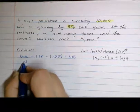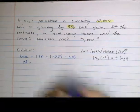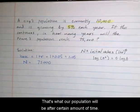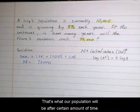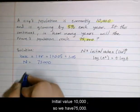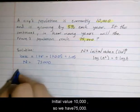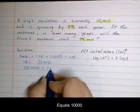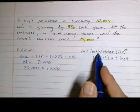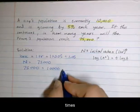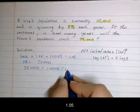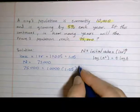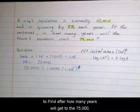N is 75,000, so that's what our population will be after a certain amount of time. Initial value is 10,000, so we have 75,000 equals 10,000 times 1.05 to the t. To find after how many years we'll get to 75,000, we have to solve this for t.